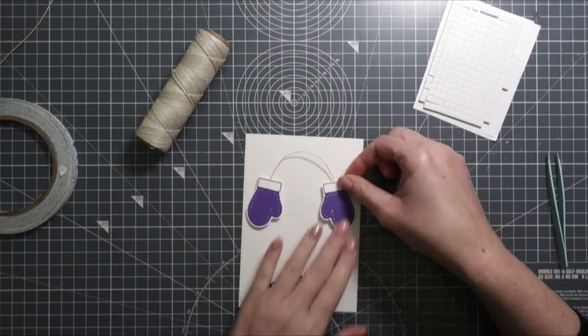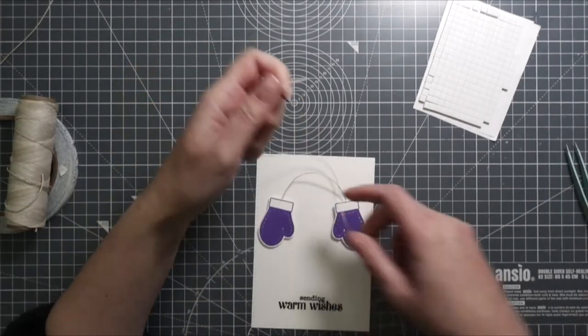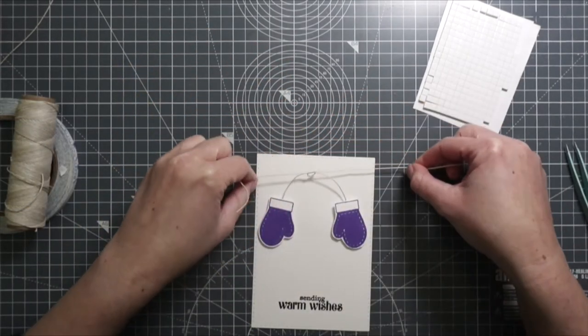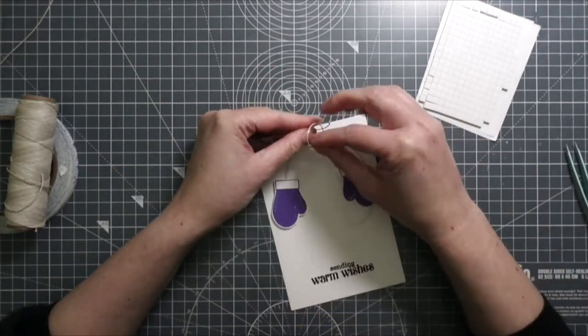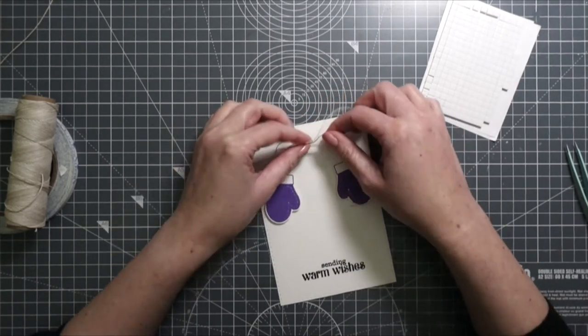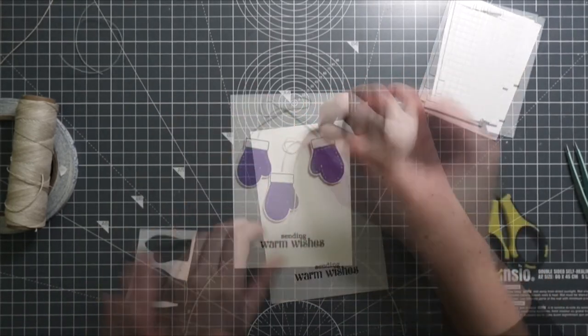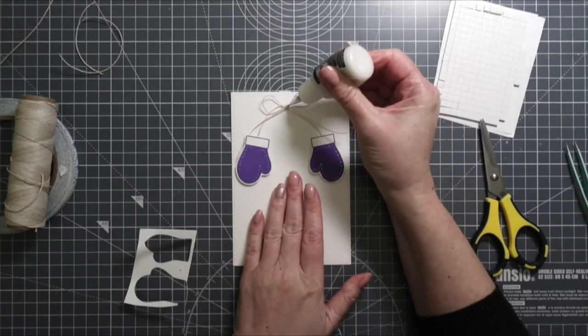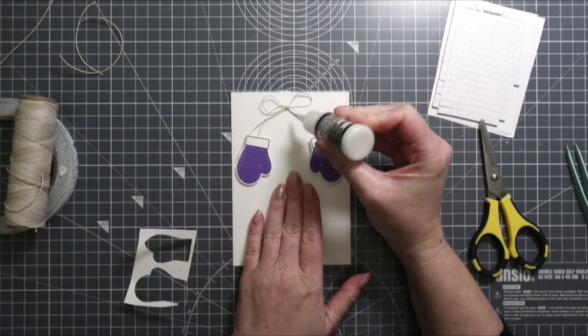Then I took another piece of twine and tied it into a bow—I just think it needed something extra. After I was happy with the look of the bow, I used the multi-medium adhesive from Ranger and added a dot of glue on the bow so it doesn't come loose.